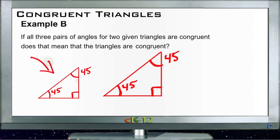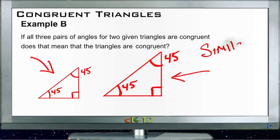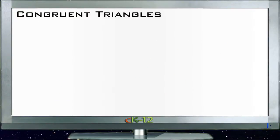If all three pairs of angles for two given triangles are congruent, then we know that the triangles are similar, which means they have the same shape. But we do not know that they are congruent because we don't know whether or not they're the same size.